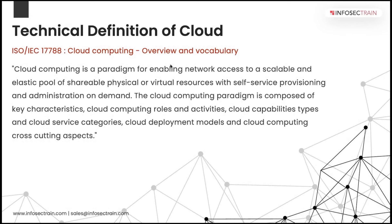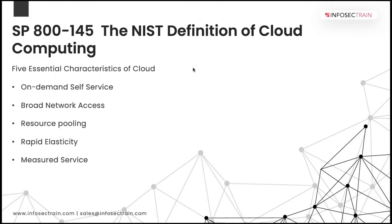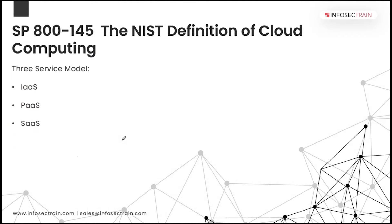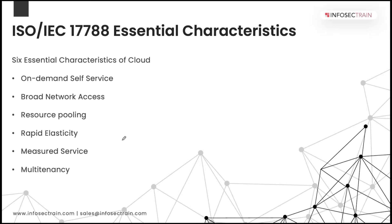ISO was going to a more granular level, and then we jumped into the more essential part. Remember, these five essential characteristics we talked about yesterday: on-demand self-service, broad network access, resource pooling, rapid elasticity, and measured service. These were the five pillars of cloud. When we talk about security as a service, these will be used again. Then we talked about the different models defined in NIST and the deployment models as well.